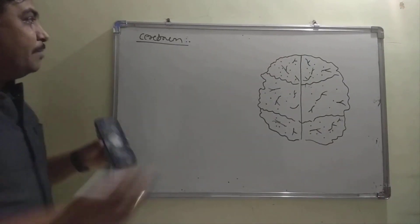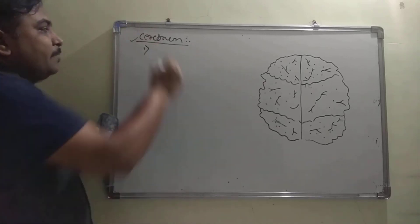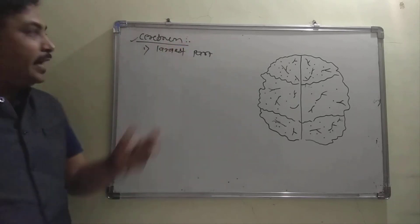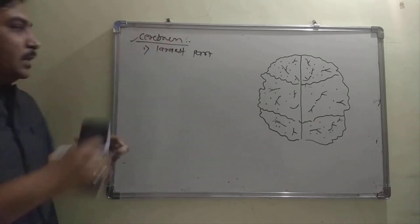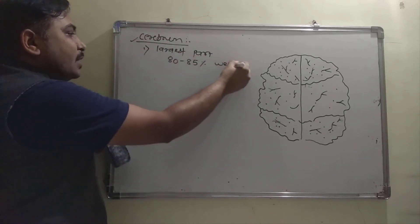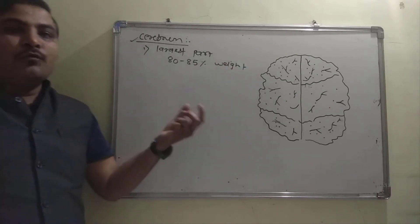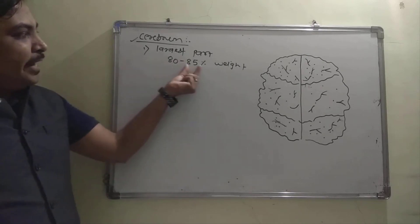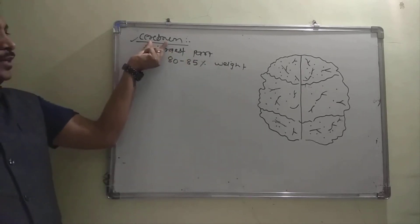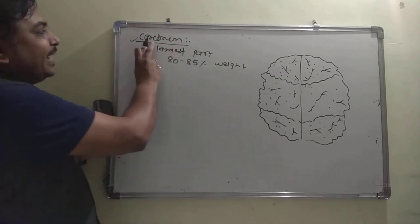The second part of the forebrain is the cerebrum. This is the largest part of your brain, forming approximately 80 to 85 percent of the brain's weight. The average weight of the brain is around 1300 to 1400 grams, and alone this part — the cerebrum — makes up 80 to 85 percent of that.